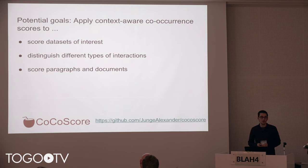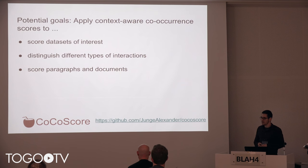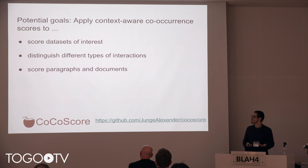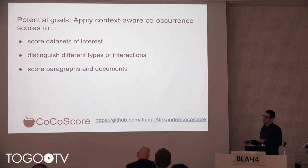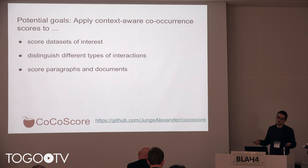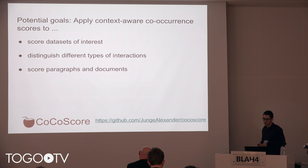Some ideas for what we could work on together here: using the scoring approach on other datasets that you bring, since the goal is to make this scoring library as good and robust as possible — so input from everyone and trying it on additional datasets would be of great interest. Also, maybe trying to distinguish different types of interactions — for instance, can we distinguish gene-disease associations involving a biomarker relationship versus those involving an underlying genetic mutation? Or can we improve the machine learning model and extend it beyond sentences to paragraphs or even whole documents?